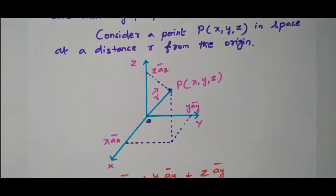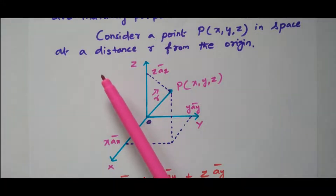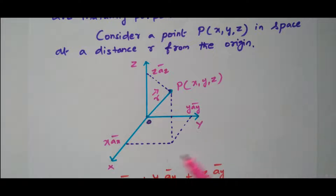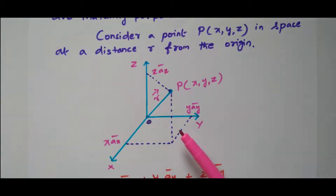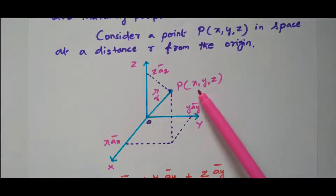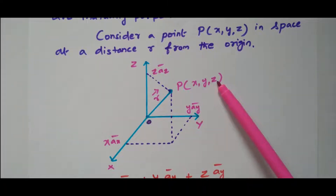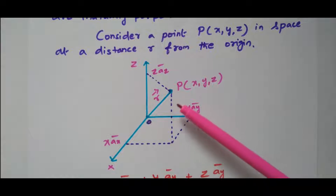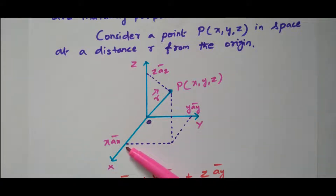We will see the diagram. Consider a point P(x, y, z) in space at a distance r from the origin. We have three axes: x-axis, y-axis, and z-axis. To represent this point, the corresponding value in the z direction is z·az, where az is the unit vector in the z-axis. Similarly, the y component is y·ay, the unit vector in the y-axis, and the x component is x·ax, the unit vector in the x-axis.